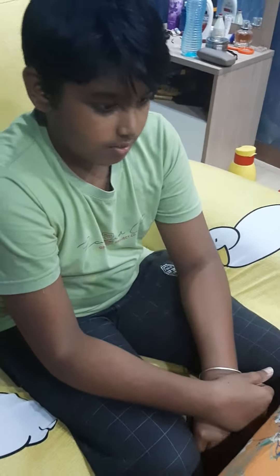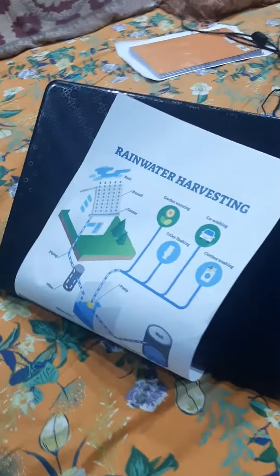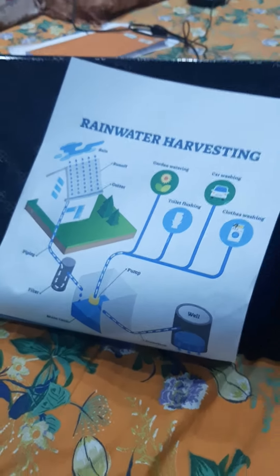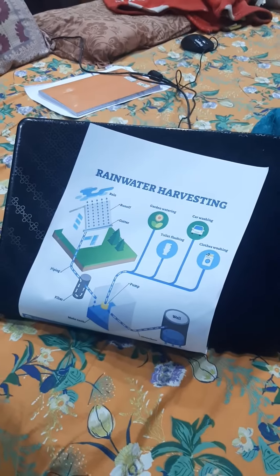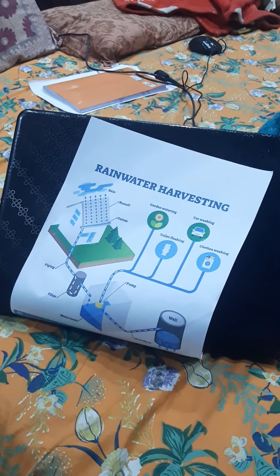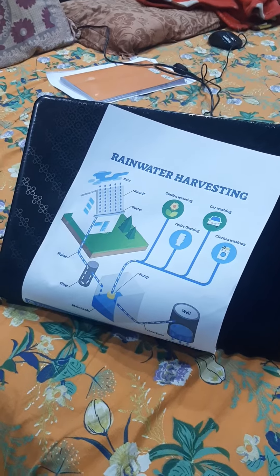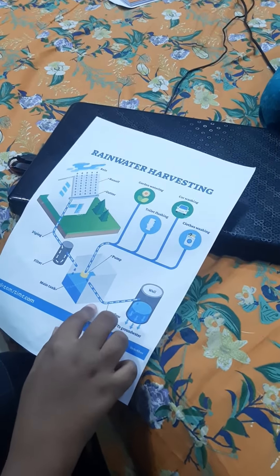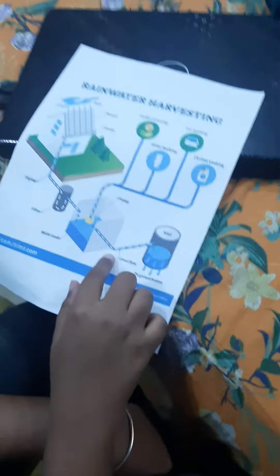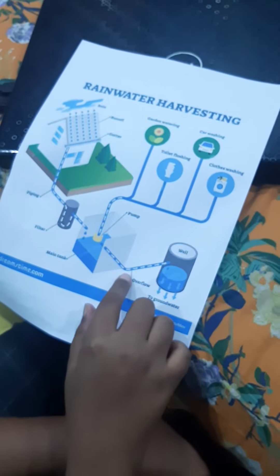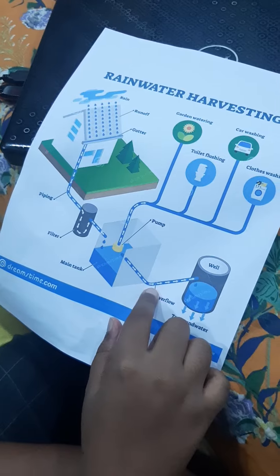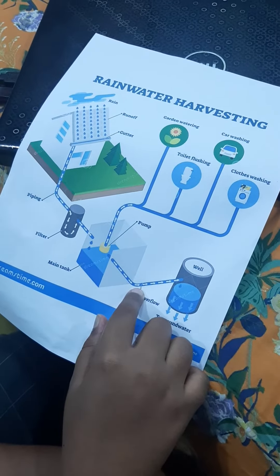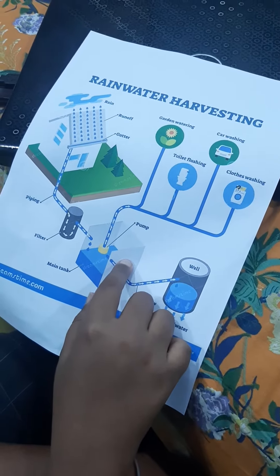In the given figure, during rainfall, water gets collected on the roof which gets transferred through pipes connected to the roof gutter. Rainwater often has impurities, so before the storage tank, a filter is kept through which water gets filtered.